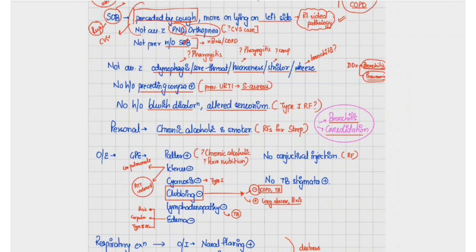Based on history, the two differentials are bronchitis and pneumonia. On general physical examination, pallor is present, possibly due to chronic alcoholism leading to poor nutrition. Icterus, cyanosis, clubbing, lymphadenopathy, and edema are absent. These are important to check in respiratory cases — icterus can be present due to cor pulmonale or ATT-induced hepatotoxicity in pulmonary TB.